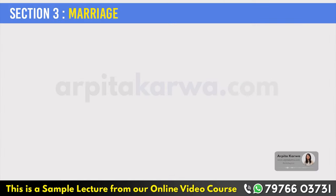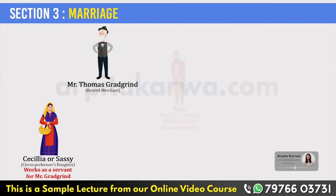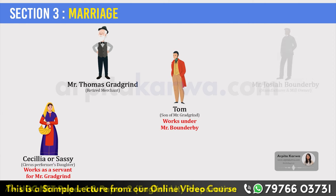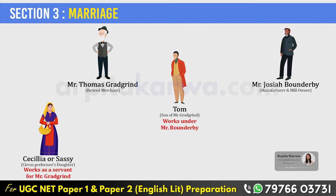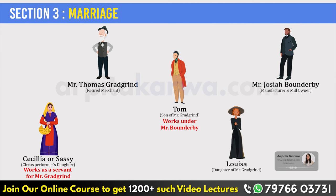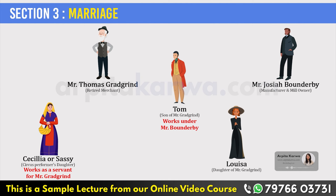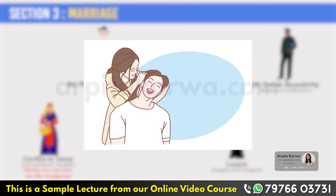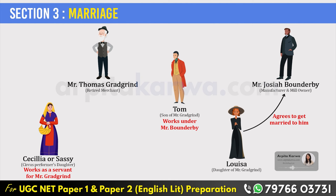Several years pass. Sissy is now the housekeeper of Mr. Bounderby, and his son Tom works under Mr. Bounderby's supervision. One day, Mr. Gradgrind asks his daughter Louisa to marry Mr. Bounderby, who is twice Louisa's age. He tries to convince her, as Bounderby is rich and influential, and the marriage would also benefit Tom's career and social standing. Since the Gradgrind family does not believe in emotions, Louisa easily agrees. After the marriage, both Louisa and Tom live with Mr. Bounderby as Tom learns from him.